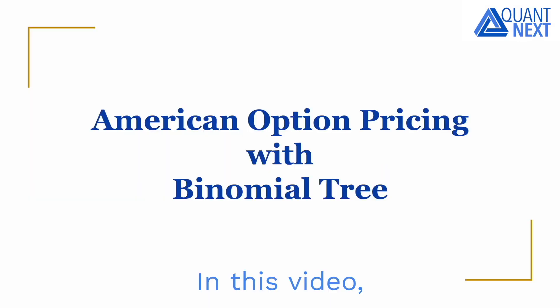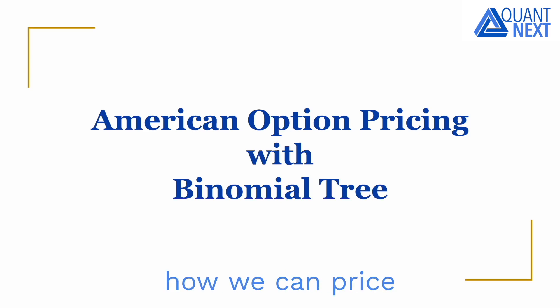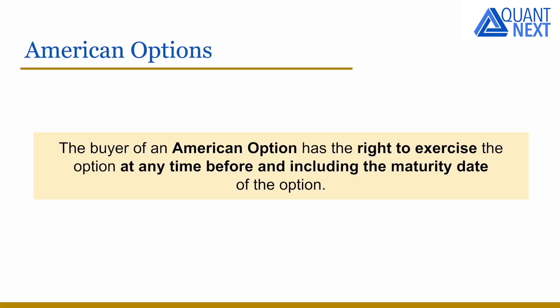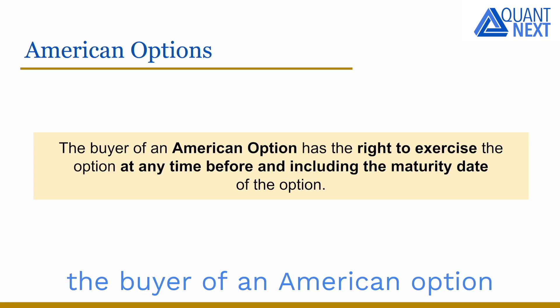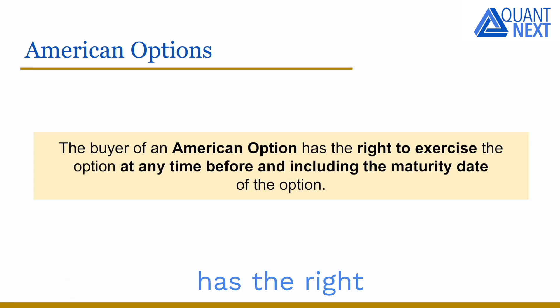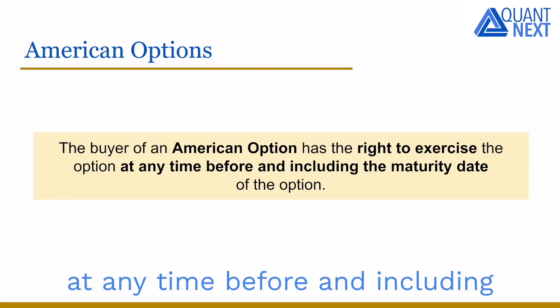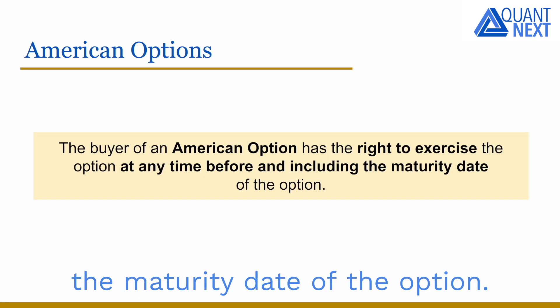Hi everyone! In this video we will see how we can price American options using a backward recursive algorithm in a binomial model. As a reminder, the buyer of an American option has the right to exercise the option at any time before and including the maturity date of the option.